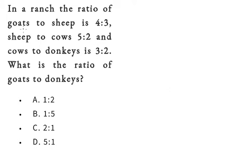We know that we have goats to sheep, that's 4 over 3, we have sheep to cows which is 5 over 2, and cows to donkeys, that's 3 over 2.